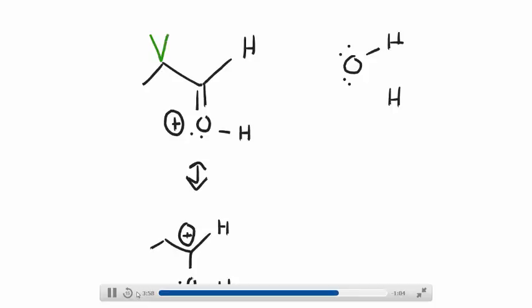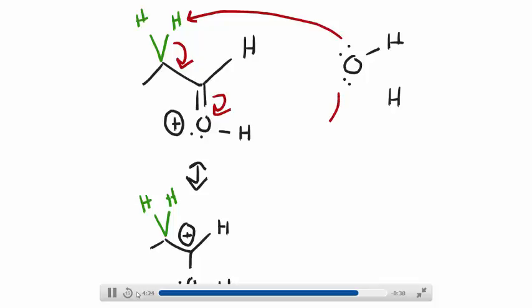Those alpha protons we're talking about, drawn in green, are the ones we're concerned with taking. You can do this from either resonance structure—it doesn't matter. If you do it from the one on top, remove the alpha proton. Carbon is more electronegative, so carbon will take that pair of electrons and make a carbon-carbon double bond, breaking the carbon-oxygen double bond. If you do this from the resonance structure below, take the alpha proton and use the electrons in the carbon-hydrogen bond to make the carbon-carbon double bond.